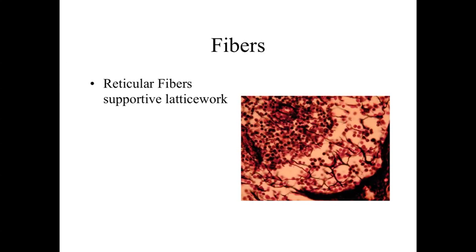The final type of fiber, found in a few locations in the body, are the reticular fibers. In this silver-stained specimen we can see a two-dimensional view of a jungle gym-like structure — a supportive lattice work, almost like a scaffold — which allows cells to migrate through the region. These reticular fibers can be found in lymph nodes and hematopoietic organs where cells are migrating through the area.